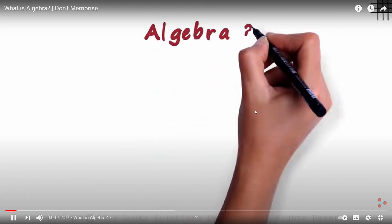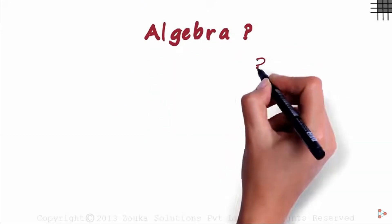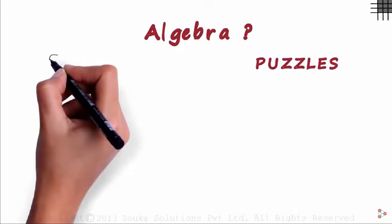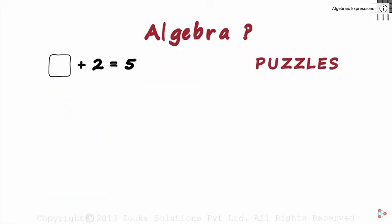What is Algebra? It's simple. It's all about puzzles. Here's one for you. This plus 2 equals 5. We just have to find the number in this box.